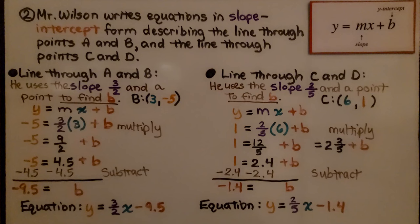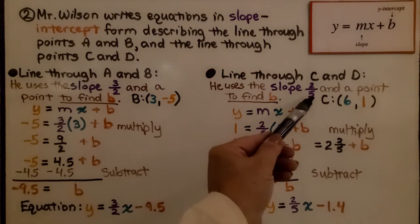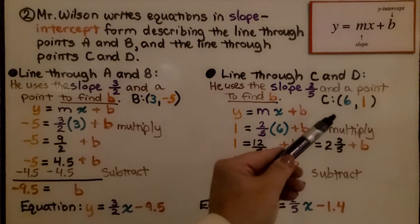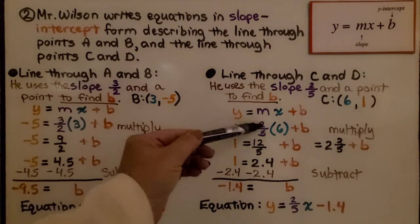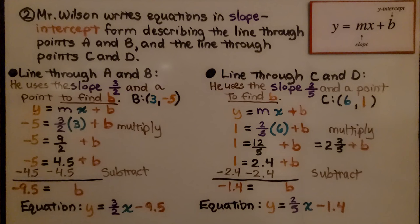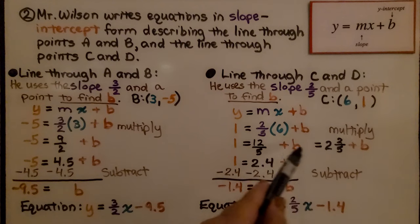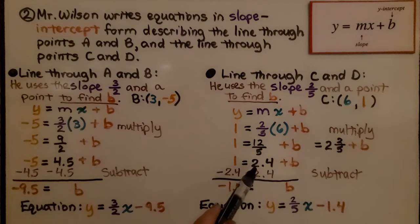For line through C and D, he uses the slope 2 fifths that we found, and a point. So we can use point C, 6 for x, 1 for y. We're going to plug it into this equation. We have 2 fifths for our slope, 6 for x, 1 for y. We multiply and get 12 fifths, which simplifies to 2.4. We subtract 2.4 from each side and get that b equals negative 1.4. Now we have our equation. Mr. Wilson has his equation. Y equals 2 fifths x minus 1.4.